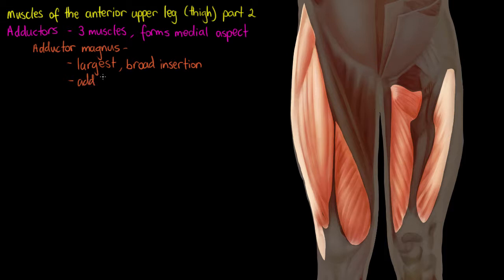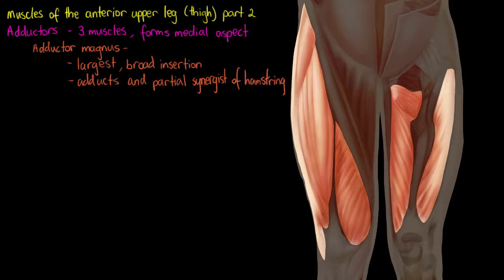Our adductor magnus is responsible for adducting — it's one of the muscles that has its function in the name, so it's pretty easy to remember. Adducting means it is moving our leg closer toward the midline. It's also going to be a partial synergist of our hamstring. Our hamstrings are muscles on the posterior aspect of our leg, so they help with a backward movement or flexion of our knee joint.